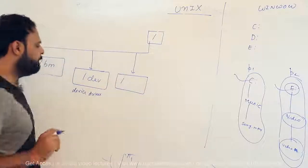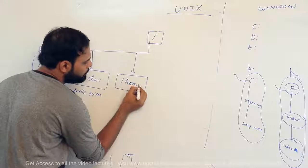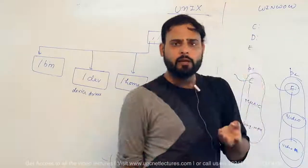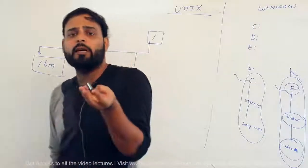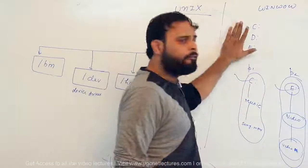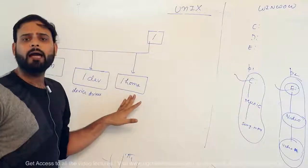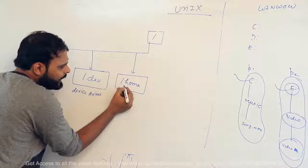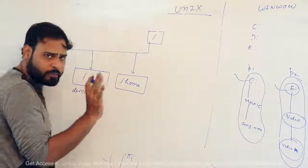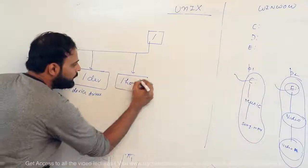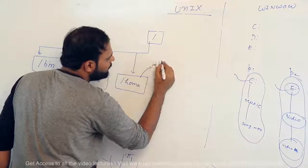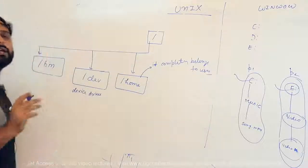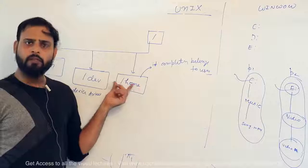After /dev, there is the /home directory. Similar to how Windows requires a username and password during installation, in UNIX the home directory is the space for a user. Inside /home there are many directories that completely belong to the user. All user-related information is placed in the /home folder.